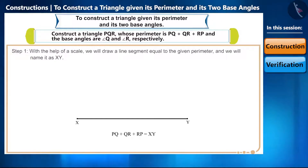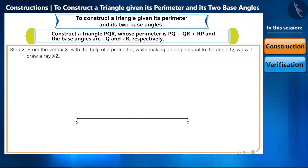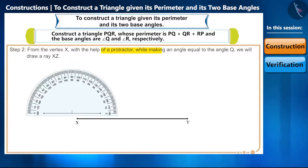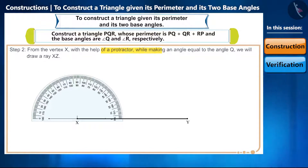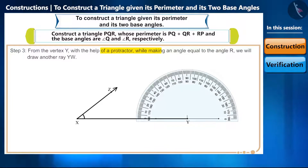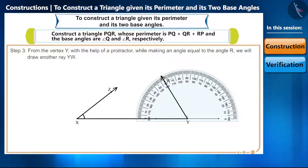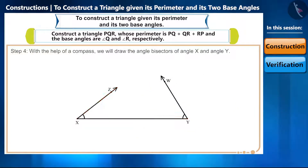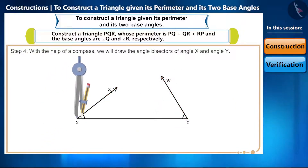Step 2: from vertex X, with the help of a protractor, draw a ray making an angle equal to angle Q. Step 3: similarly, from vertex Y, with the help of a protractor, draw another ray YW making an angle equal to angle R. Step 4: with the help of a compass, draw the angle bisectors of angle X and angle Y.